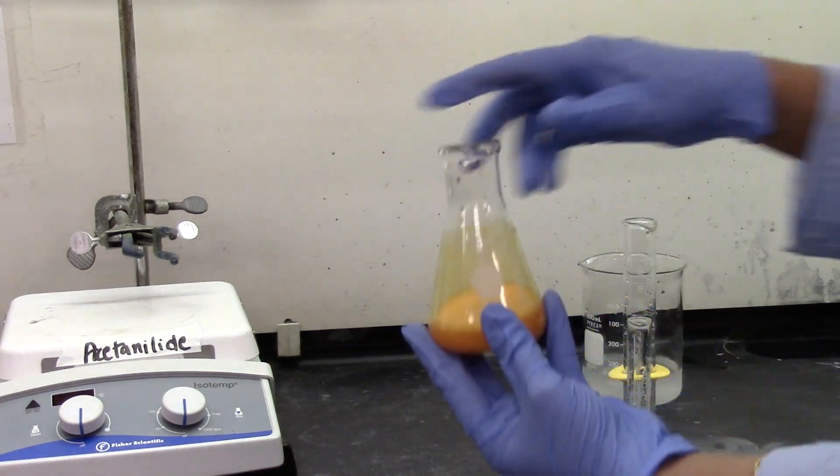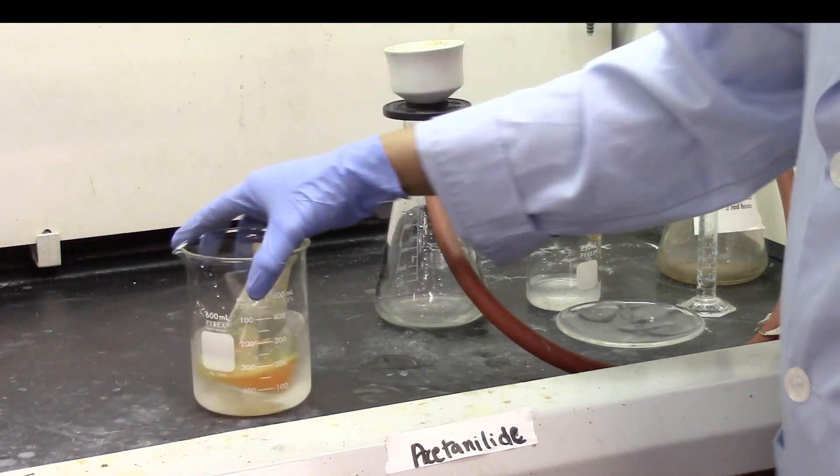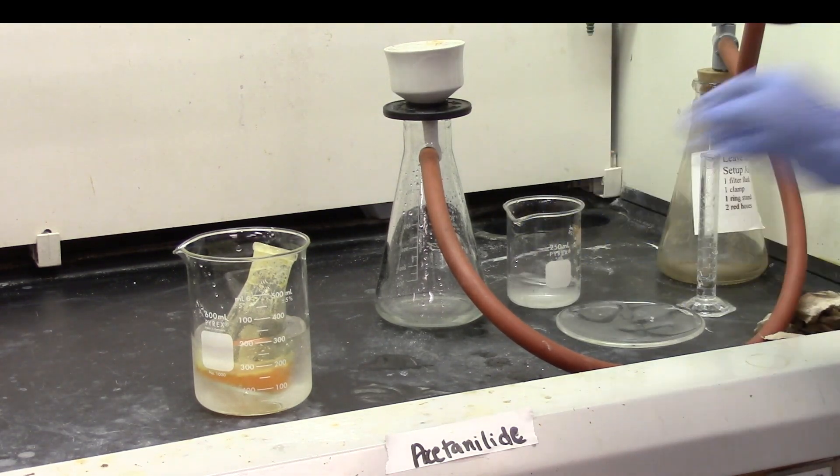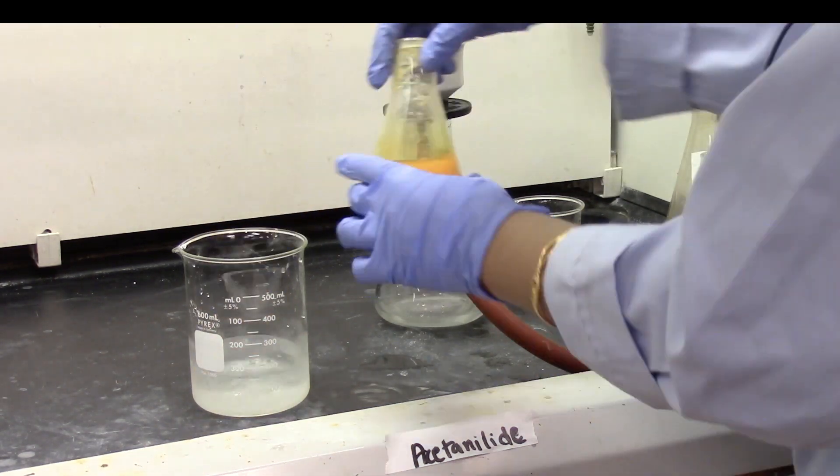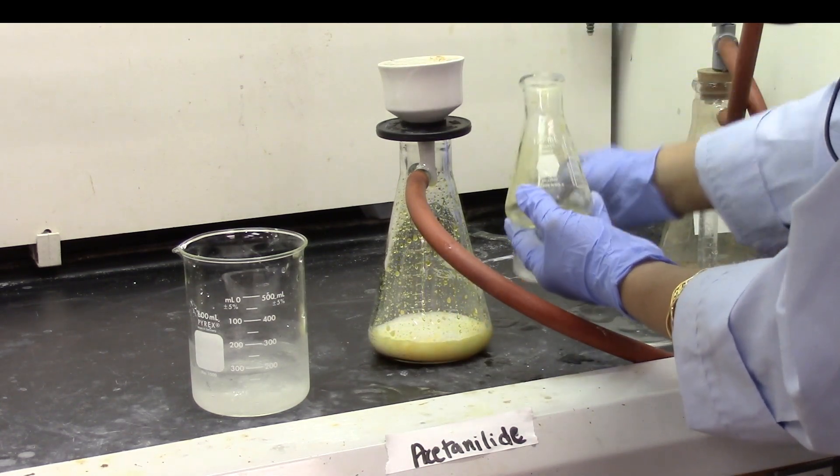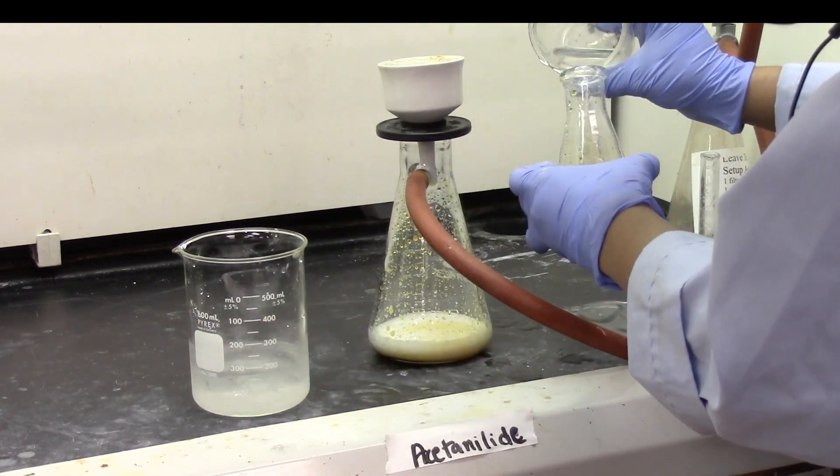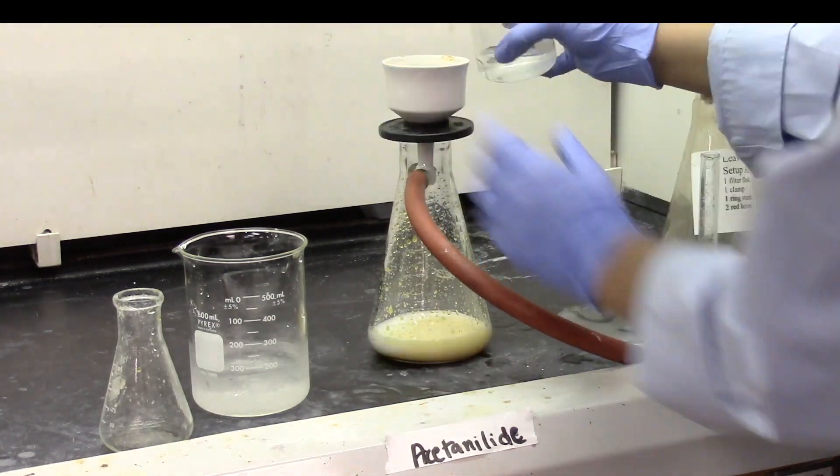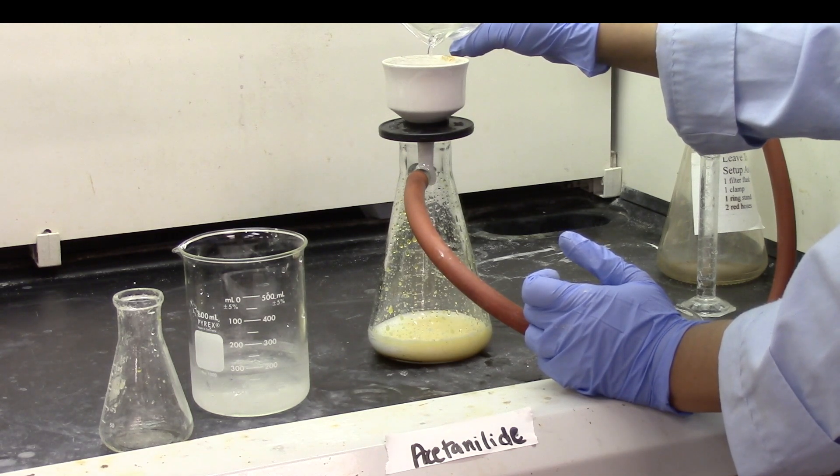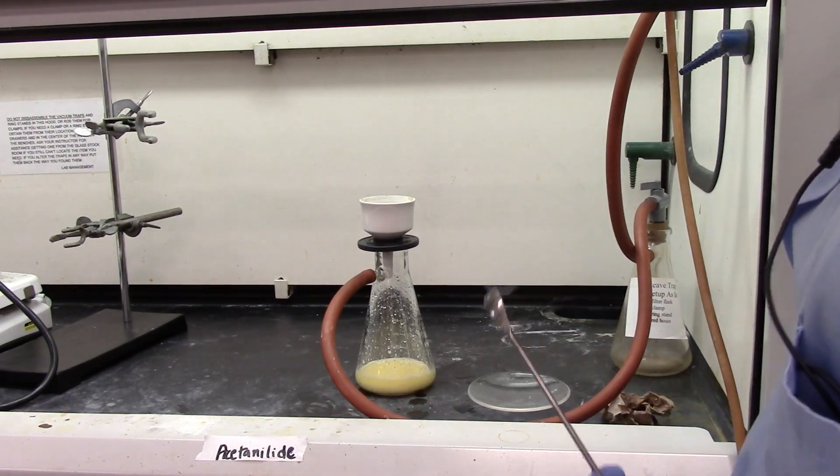So now I'm going to let it cool down in some ice cold water. I will go ahead and filter out the acetanilide product. I put the filter paper in the flask, wet the filter paper with some DI water, then turn on the vacuum. And wash the Erlenmeyer flask with some cold DI water which goes on the filtering funnel.